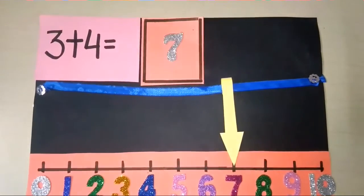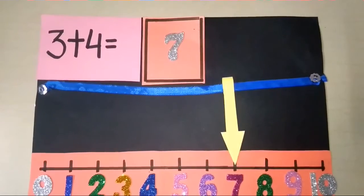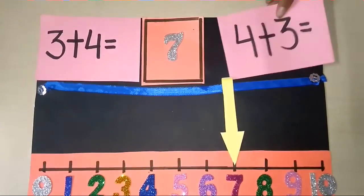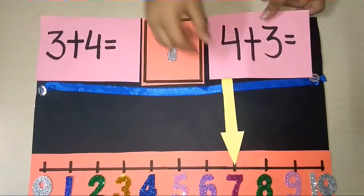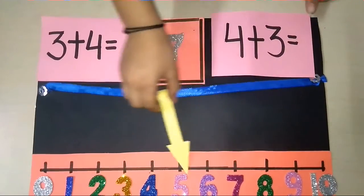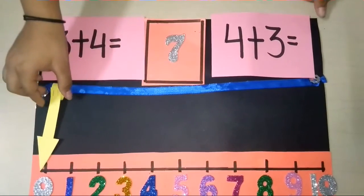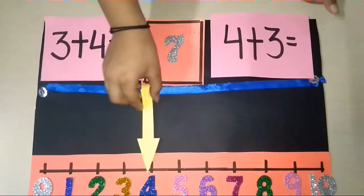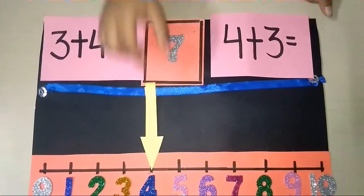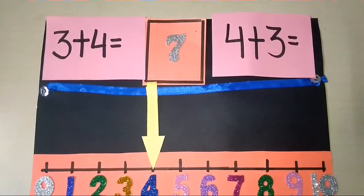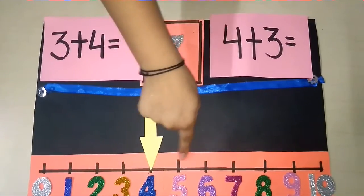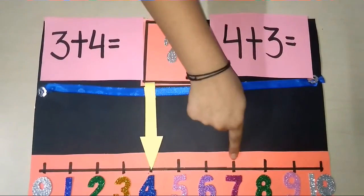Now we will add its reverse, that is 4 plus 3. We will bring our arrow at 4 and add 3 to it. So 1, 2 and 3.